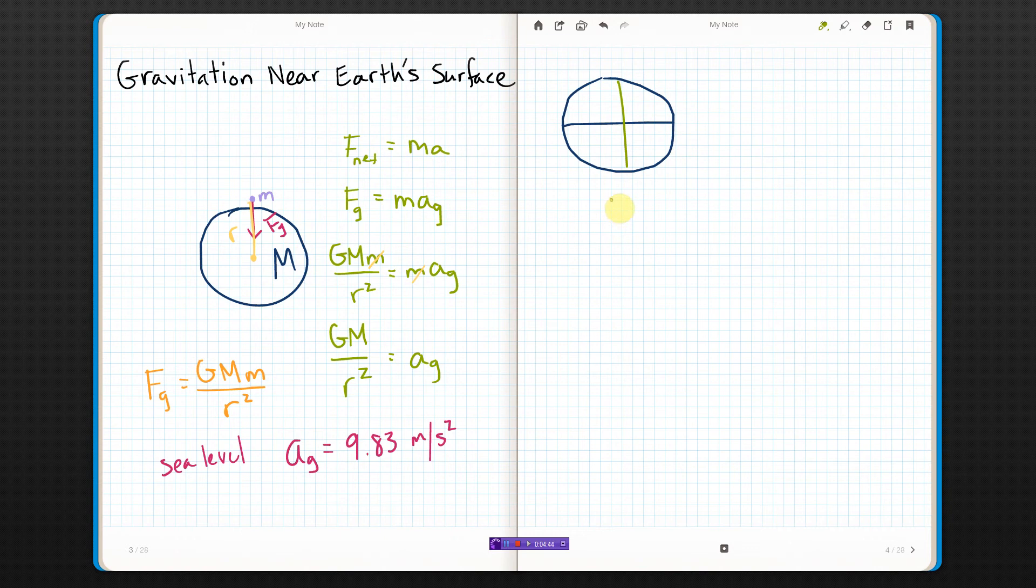But the most important part, the part that makes the largest difference, is the fact that the Earth spins. So if this is the axis, it's spinning like this. When something spins, you need a centripetal force to keep it going in a circle. If you have something on the surface, if we look at this where this is the north pole...